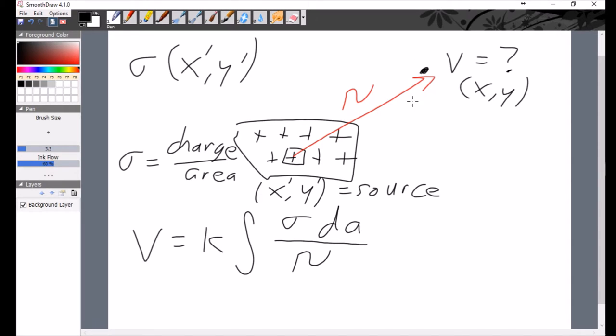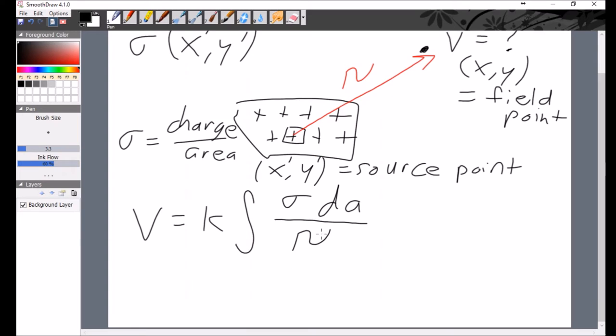So the source point is where it comes from, the field point is where it goes to. And so in order to calculate this script r down here, you just do a little bit of Pythagorean theorem. So it's going to be square root of the x component squared plus the y component squared. The x component squared is going to be x minus x prime squared.